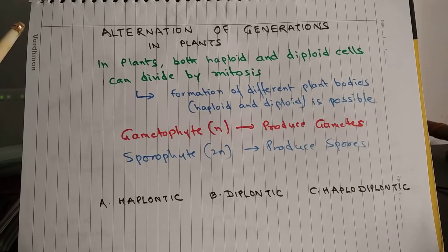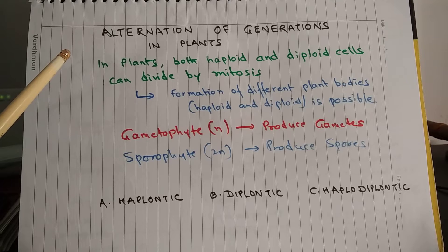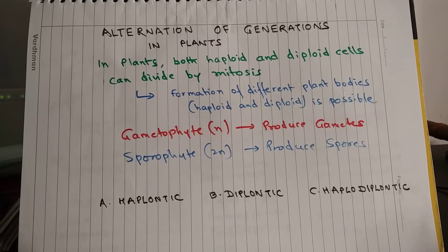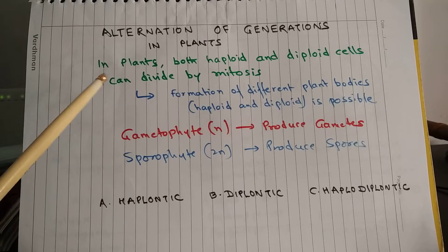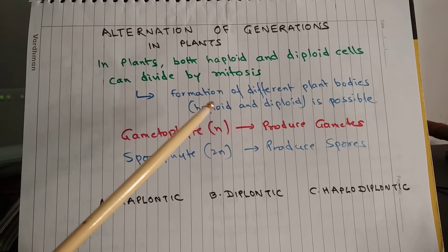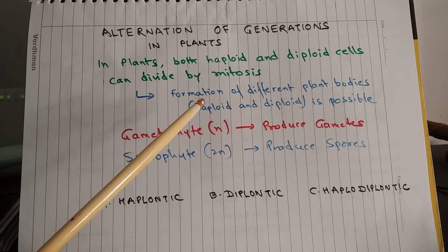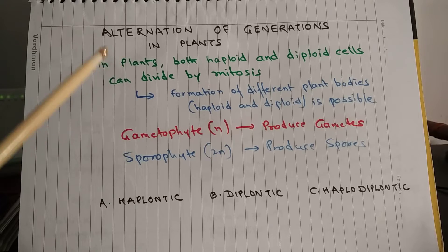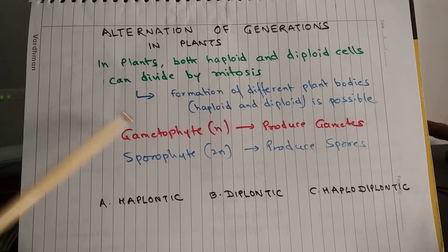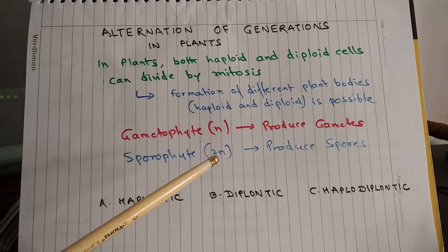In plants, both haploid and diploid cells have the ability to divide by mitosis, and this is the unique feature of plants. Because of this unique ability, there is a possibility of formation of different plant bodies — that is haploid plant body and diploid plant body — which is not possible in any other group of organisms. Because of this possibility, there is alternation of gametophyte phase and sporophyte phase in plants.